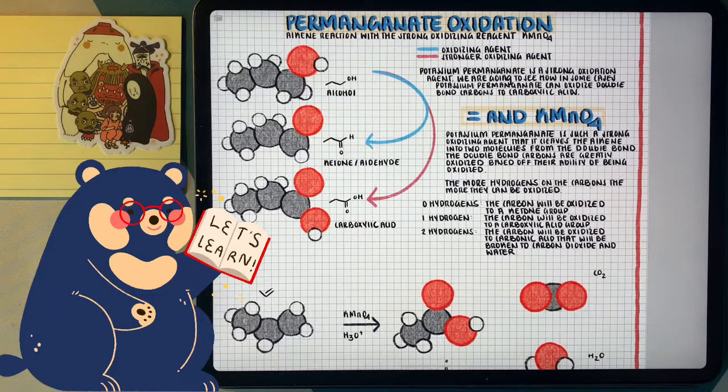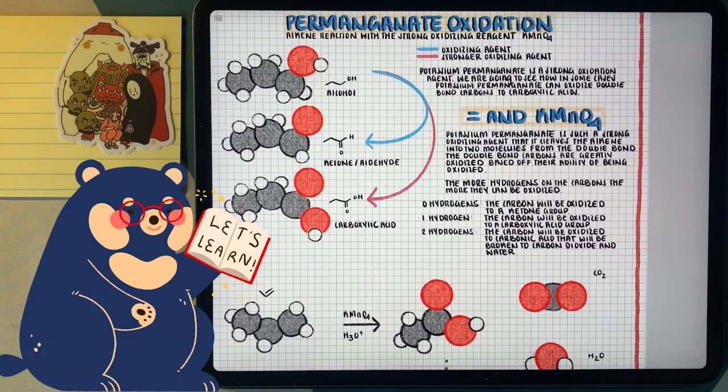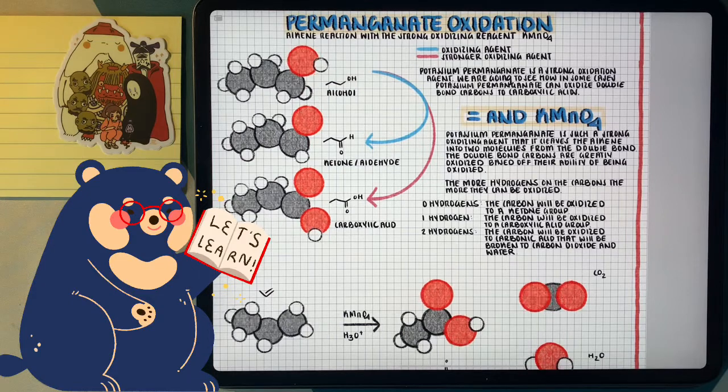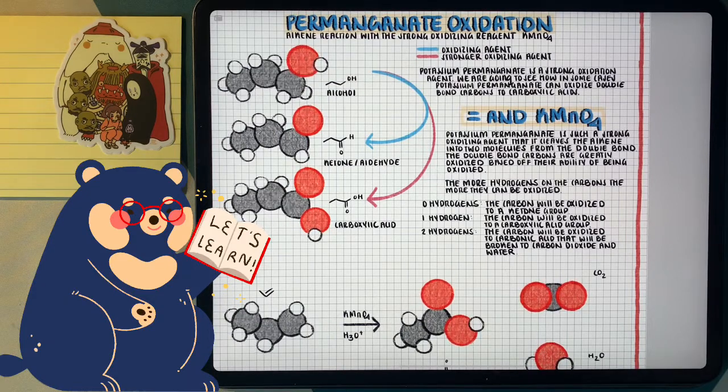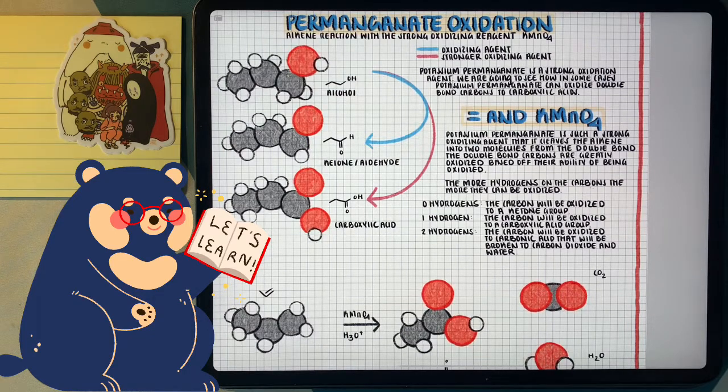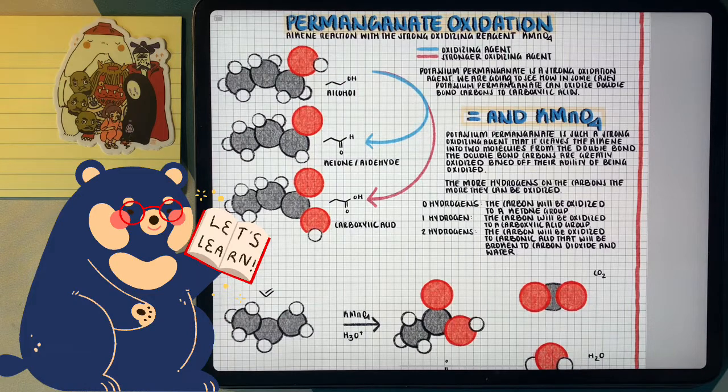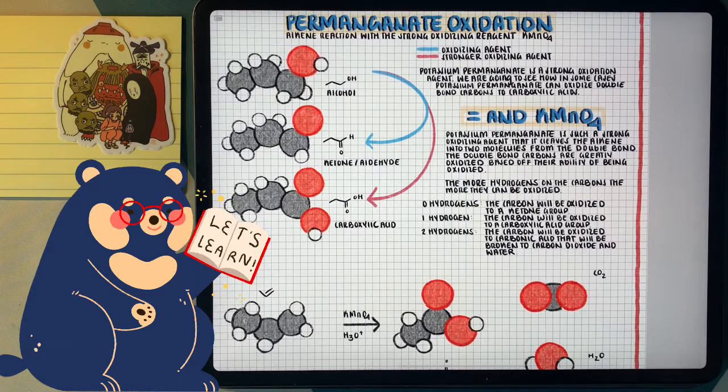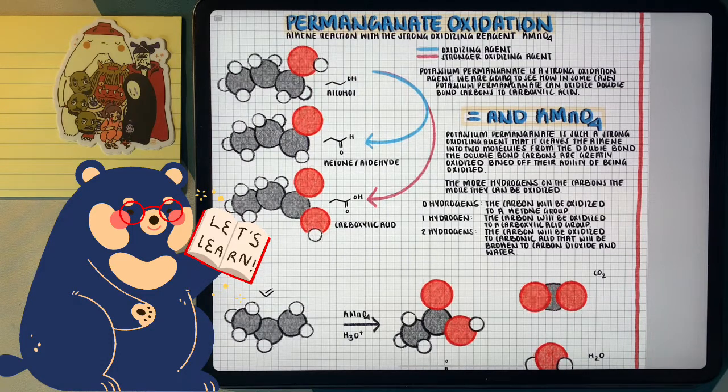KMnO4 is an extremely strong oxidizing agent. So in the way that we saw that a strong oxidizing agent can take an alcohol all the way to a carboxylic acid, a strong oxidizing agent is going to cleave the double bond of the alkene and create two different products. And depending on the amount of hydrogens on each of the double bond carbons depends what kind of products we get after the double bond is cleaved.